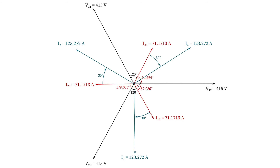Let's break down the phasor diagram. First we have our three voltages V12, V23, and V31, which were given to us at the start. We take the horizontal direction to the right as our zero degrees starting position. V12 was 415 at an angle of zero degrees, so it's drawn pointing directly to the right. Any positive angle tilts upwards from that position; any negative angle tilts downwards.